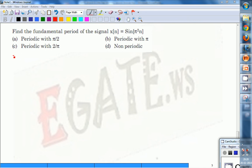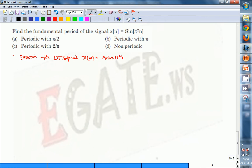Here, we need to find the period for the discrete time signal x[n] = sin(π²n).